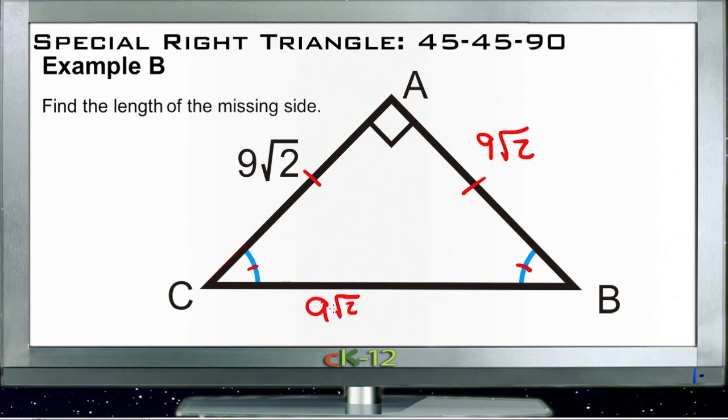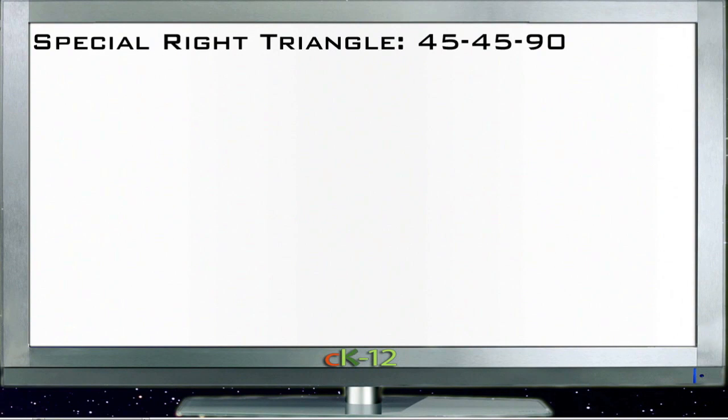Well, anytime you have a root times itself, it's the same thing as saying the root squared. And anytime you have a root and a square inside of each other, they cancel out. So we end up with 9 times 2, or 18. So our missing side down here is 18 units. And then for Example C...